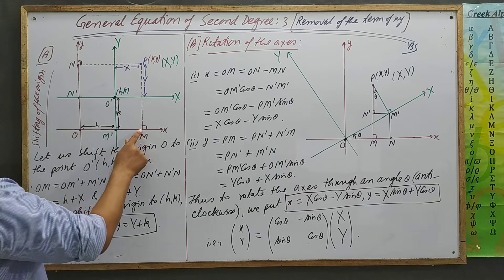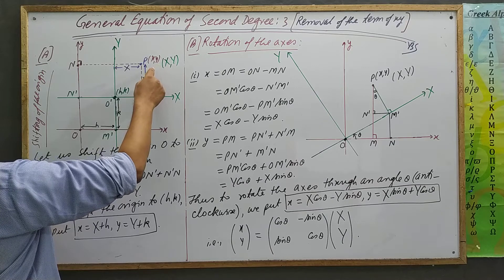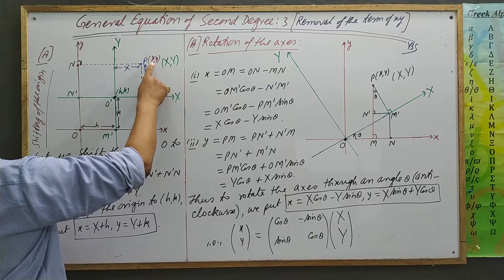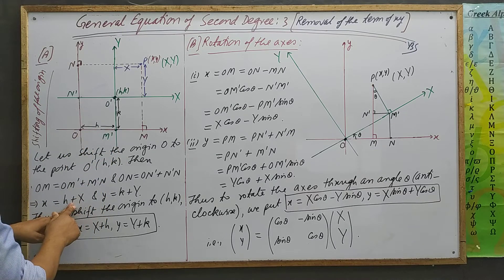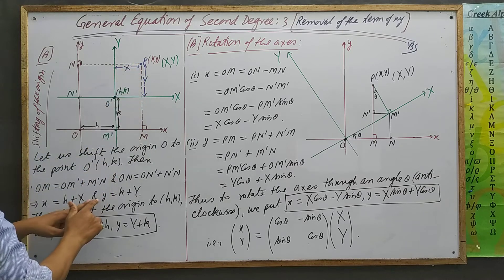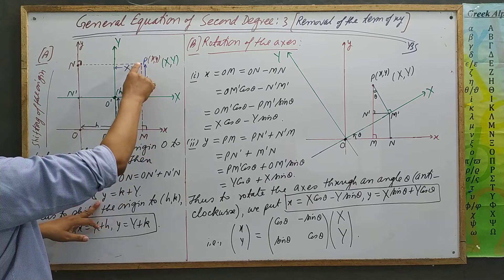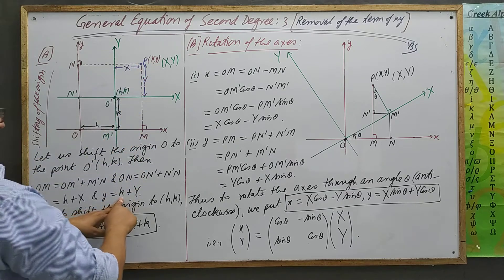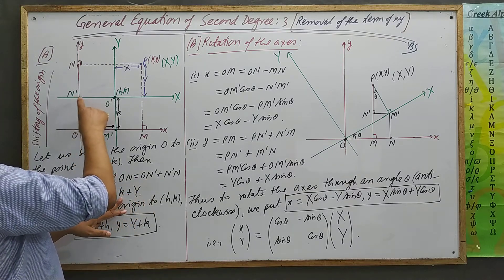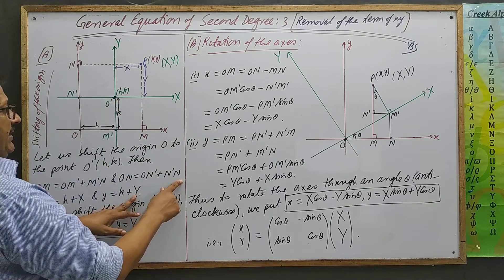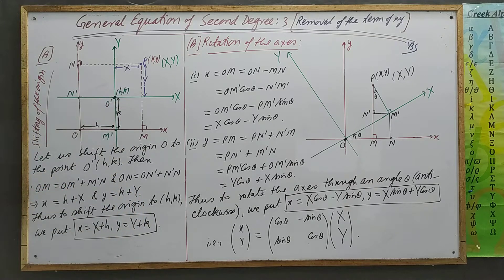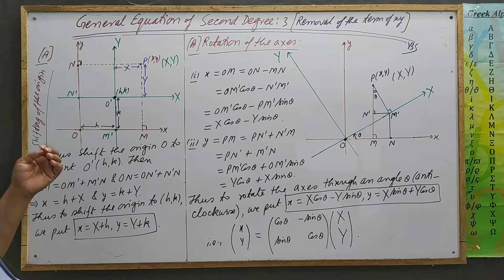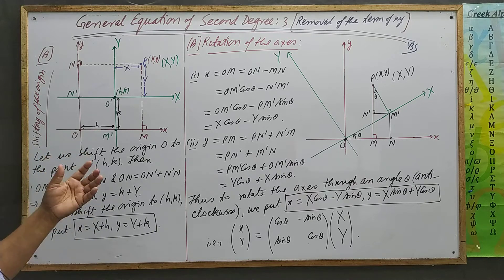Now, OM equals small x. The distance from here to there is h, and this remaining distance is capital X. Similarly ON: from O to N, that is small y = ON' + N'N, which gives y = k + capital Y. Thus, to shift the origin to (h, k), we put x = X + h and y = Y + k, where we can also use x', y' notation instead of capital X, Y.